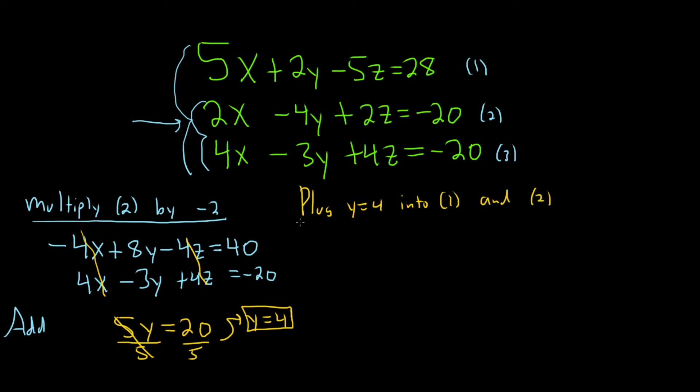Let's go ahead and do that. Is that the best thing to do? I'm not sure, but it should work. Plugging it into the first one, we have 5x plus 2 times 4 minus 5z equals 28. Let's clean this up.